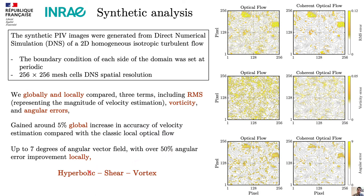To this end, we picked three specific regions: hyperbolic, shear, and vortex. For example, when we have two vortices we can have hyperbolic flow, we have a vortex region, and we have high shear — so we picked these three regions to see what improvements we have locally.